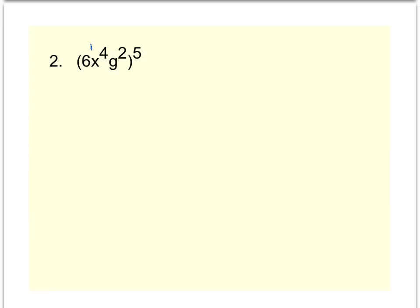So what we're allowed to do, it's kind of like a distributive property, where this 5, the exponent on the outside, is going to multiply with every exponent on the inside. So we really have 6 to the 1 times 5, x to the 4 times 5, and g to the 2 times 5.